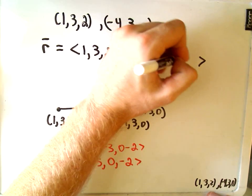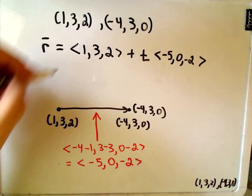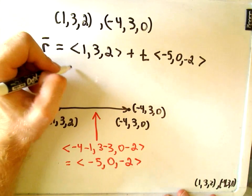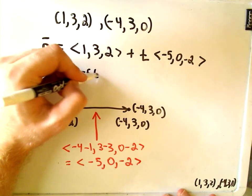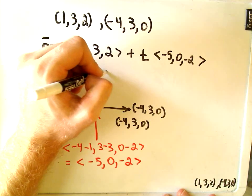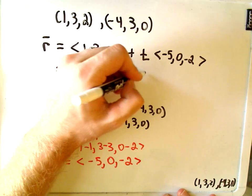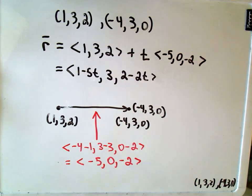And again, if you wanted to, you could do the same thing. So you would get 1 - 5t, it looks like we would get 3 + 0t, and then we get 2 - 2t as an equation for the line that goes through those two points. Okay.